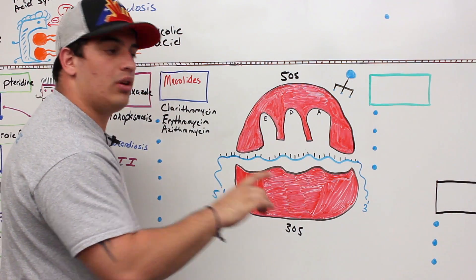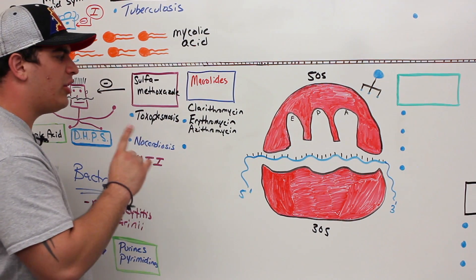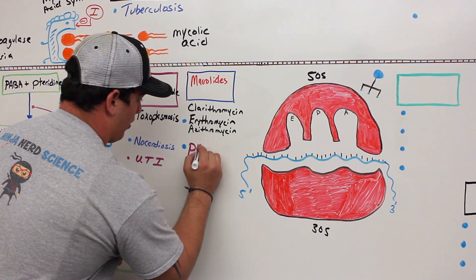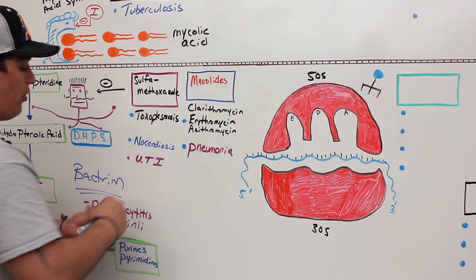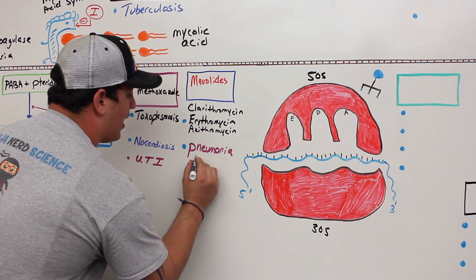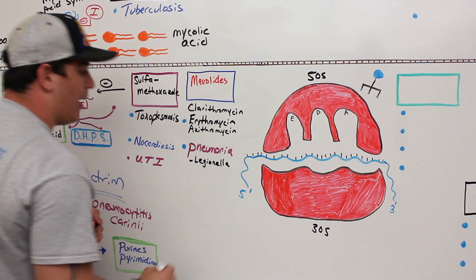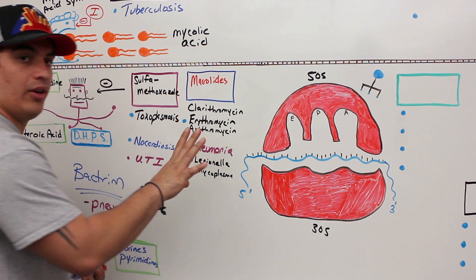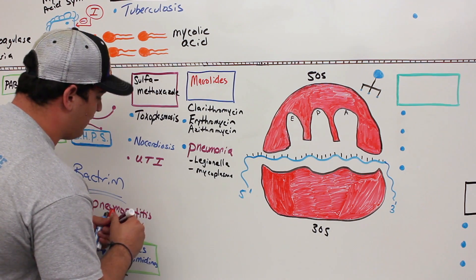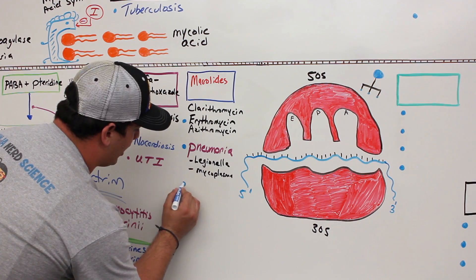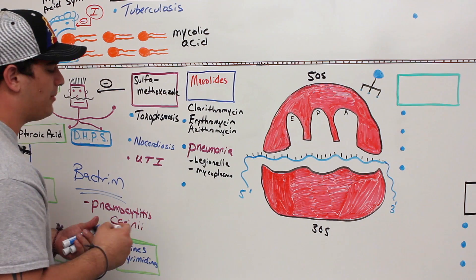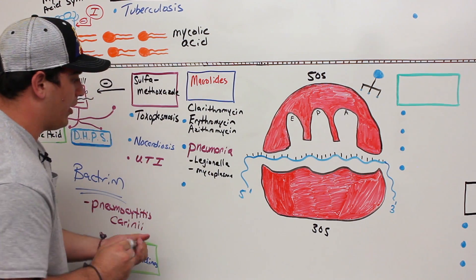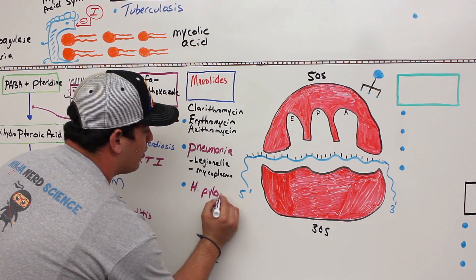Macrolides are really good at treating pneumonia. The types of bacteria causing pneumonia that they target include Legionella and Mycoplasma. Clarithromycin is also good at treating H. pylori, which is associated with peptic ulcer infections.